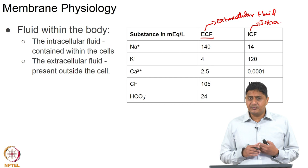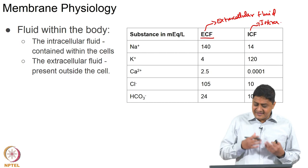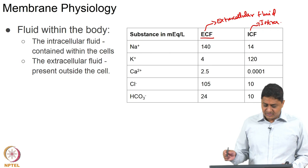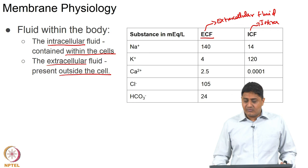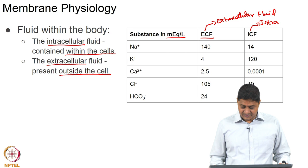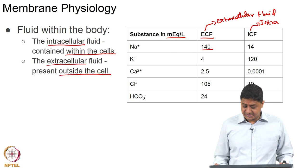About two-thirds of the body's fluid is present in the intracellular matrix, within the cell, and about one-third is present in the extracellular matrix. The fluid contained within the cell is called intracellular fluid and the fluid outside the cell is called extracellular fluid. Typical concentrations in milliequivalents per liter are given here. For sodium, 140 milliequivalents per liter is present outside the cell and 14 is present inside.